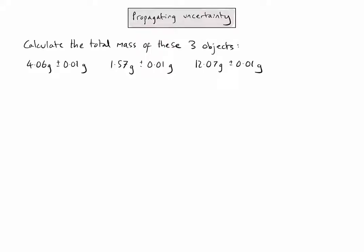Let's start by doing the actual calculation. As I'm finding the total mass of those three objects, I simply need to add together the masses of each one. Remember that when adding numbers together, I need to look at the number of decimal places in these values and give my answer to an appropriate number of decimal places. In this case, it would be two.